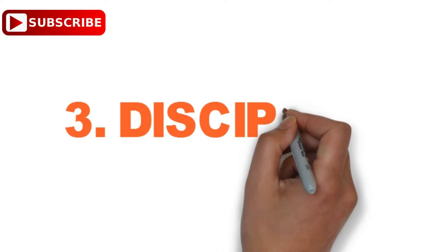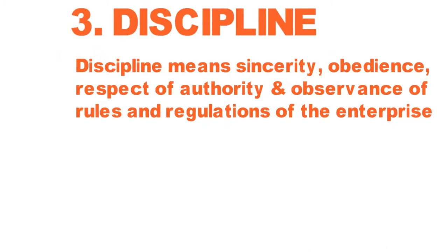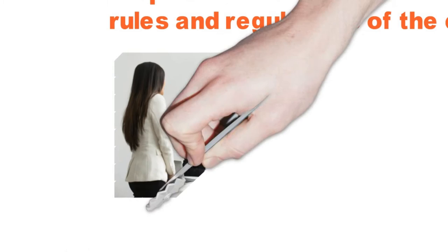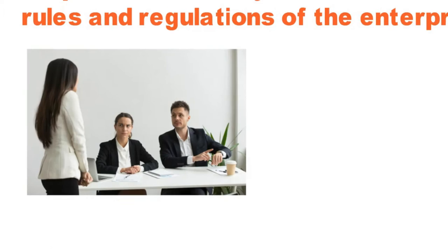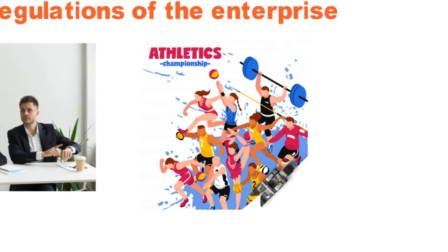Principle number three: Discipline. According to Fayol, discipline means sincerity, obedience, respect of authority, and observance of rules and regulations of the enterprise. This principle states that subordinates should respect their superiors and obey their orders. It is an important requisite for smooth running of the enterprise. For example, sports coaching can be defined as the process of motivating, guiding, and training an individual in preparation for any sport, which is only possible through proper discipline.